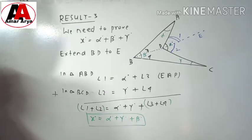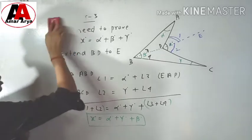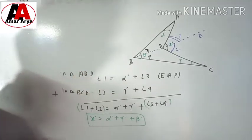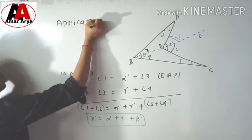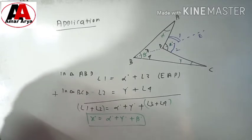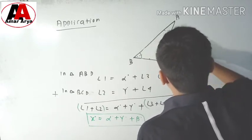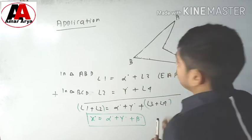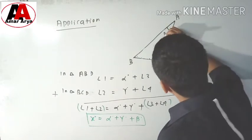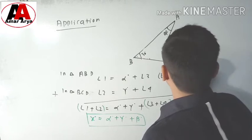Now we are going to discuss the application of this result. Here is one application. You can see this: one angle is 30 degrees, another is 60 degrees, then 40 degrees, 30 degrees, and this one is 25 degrees.